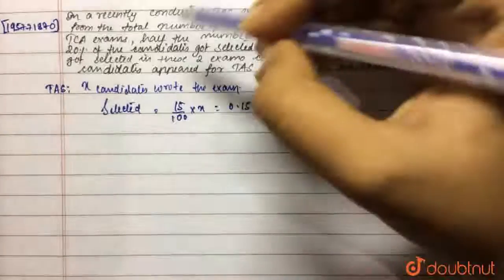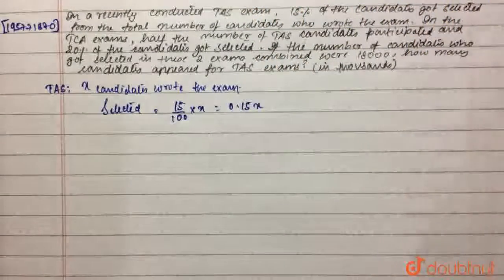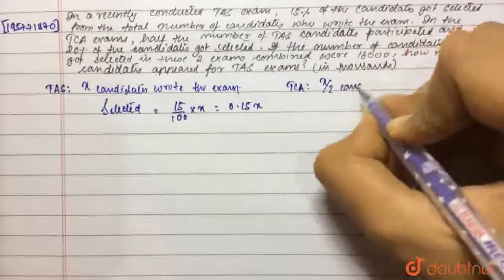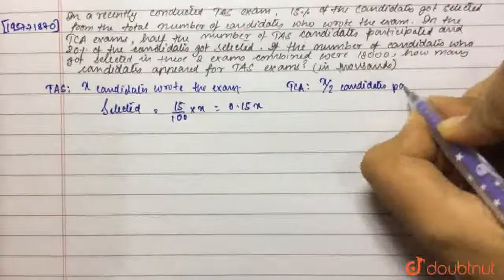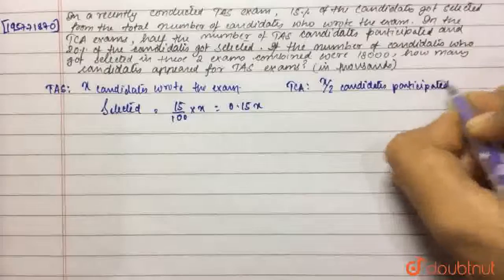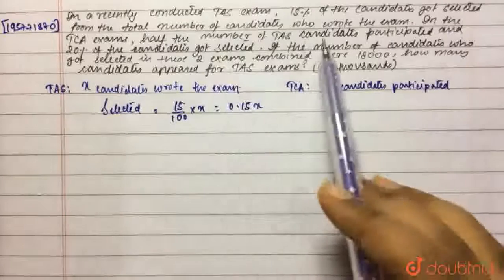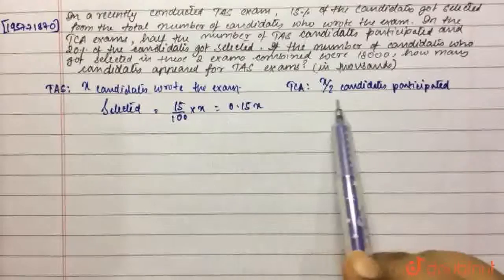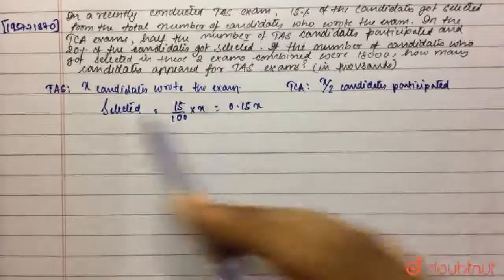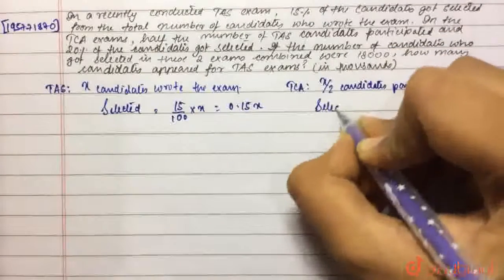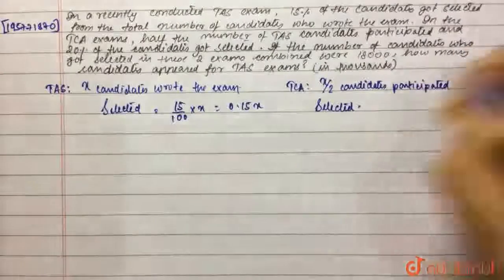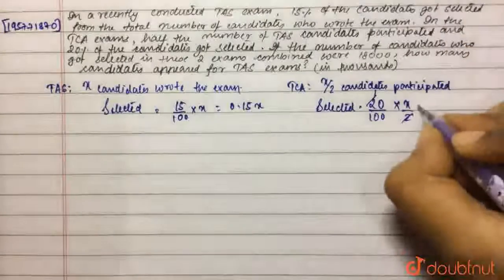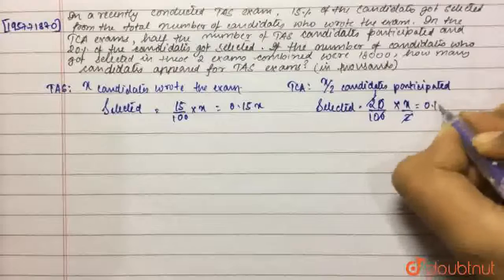Now, it is said, in the TCA exams, half the number of TAS candidates participated. So, in TCA exams, X by 2 candidates participated. Why? Because it is said that half the number of the TAS candidates participate. So, we assume that X candidates wrote the TAS exam. So, X by 2 candidates participated in the TCA exam. And 20% of the candidates got selected. So, selected will be 20% of X by 2. 20 out of 100 into X by 2. So, this will give you 0.1X.